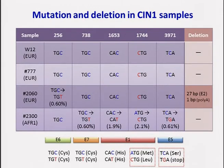In summary, HPV-16 genomes were rather homogeneous overall, but some low-level mutations were found depending on the sample. These mutations were either silent or non-silent.